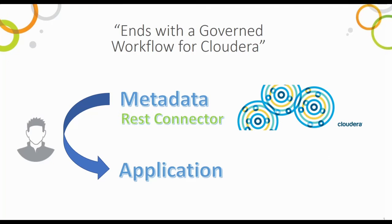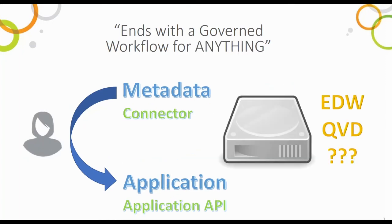We were using a REST connector and we used an application API to build that application — that's what Qlik Sense is, it's an open API. Don't limit your thinking to the fact that you can only pre-build objects on the screen. The whole point is I could talk to a data source using a connector, use the application API, and build something. Why does it have to be a REST API to talk to Cloudera? Can it be a SQL connector and talk to an EDW? Can it just be a file connector browsing QVDs and still go out and build an on-demand app?